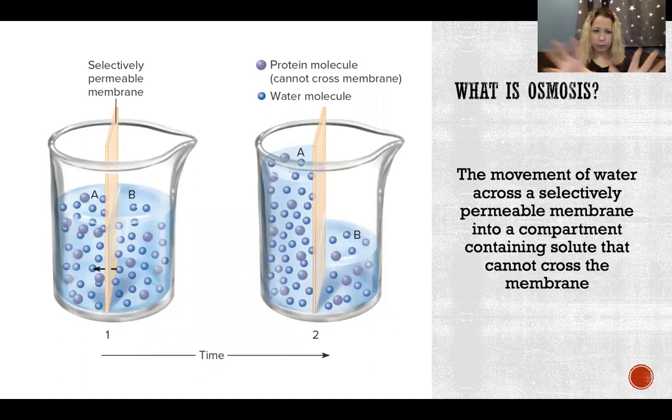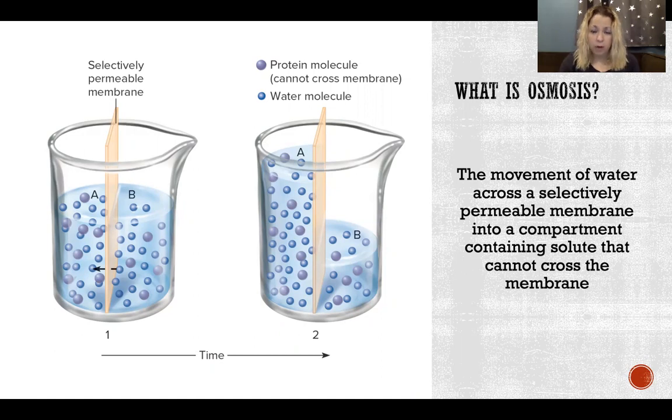When we have two compartments separated by a selectively permeable membrane, sometimes solutes can pass from side to side and sometimes they can't, or maybe certain solutes can pass and certain others can't.